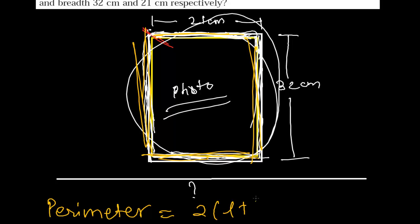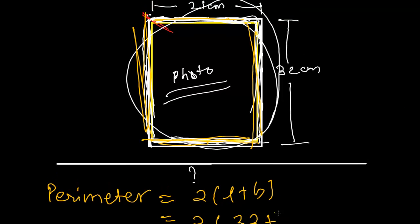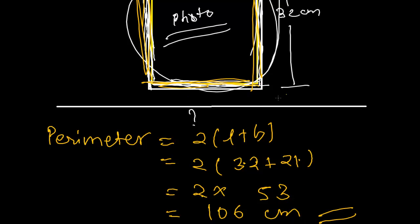So first we need to find out the perimeter of this wooden strip. This is a rectangle, and now I am using directly the formula: 2 times L plus B, that is length plus breadth. That is the perimeter of this, and this perimeter will give you the total length of this wooden strip. So here 2 times — length is 32 and breadth is 21. The perimeter will be 2 times 53, that is 106 centimeter.